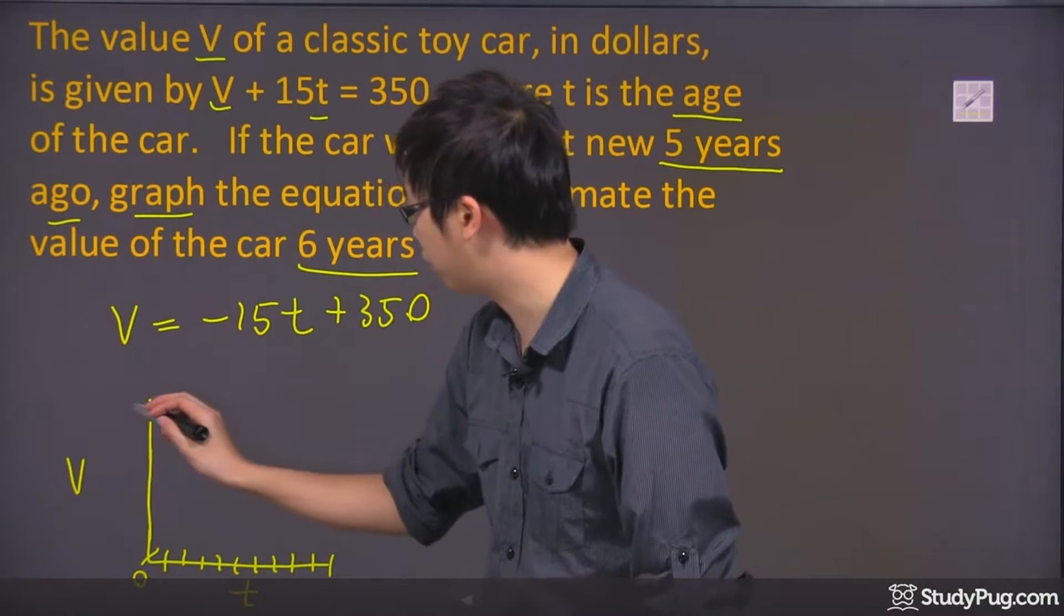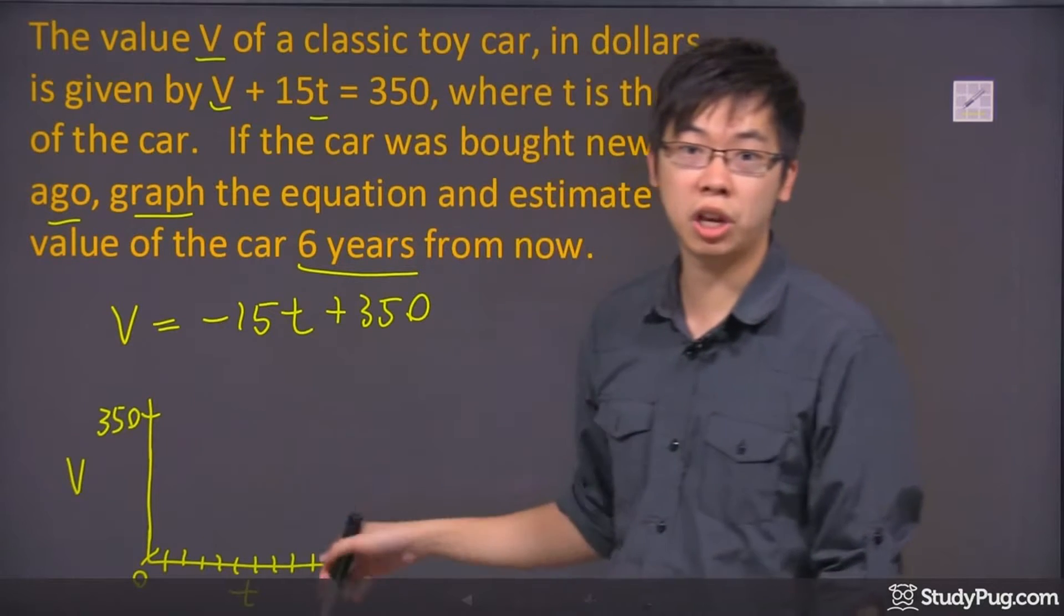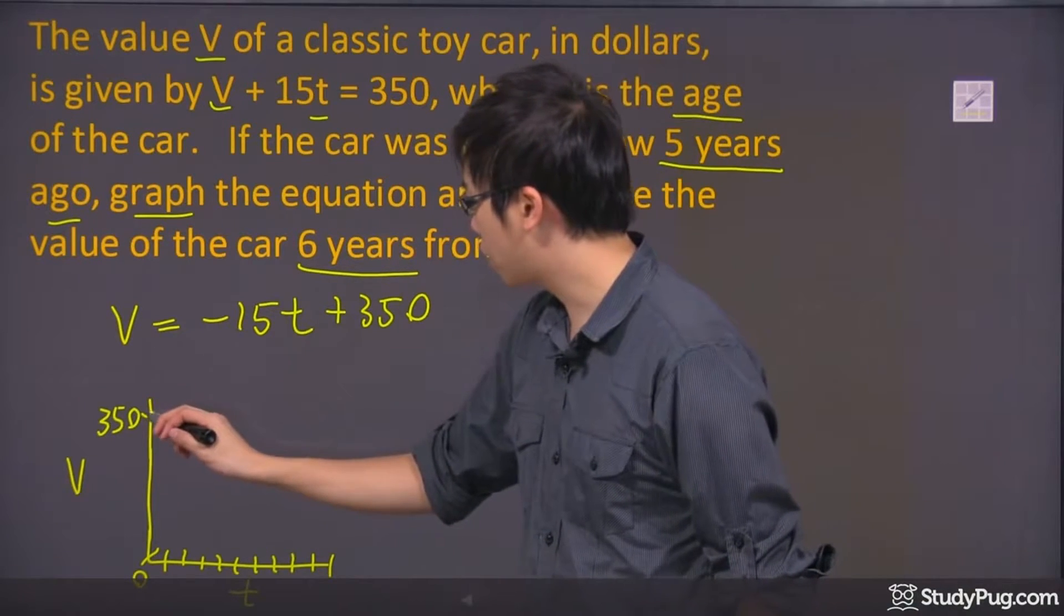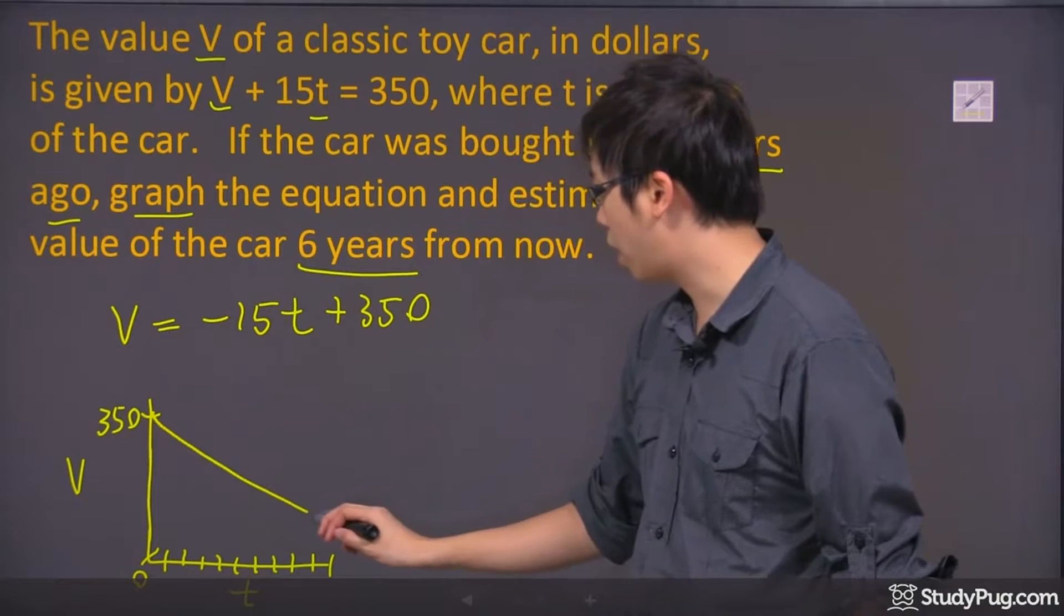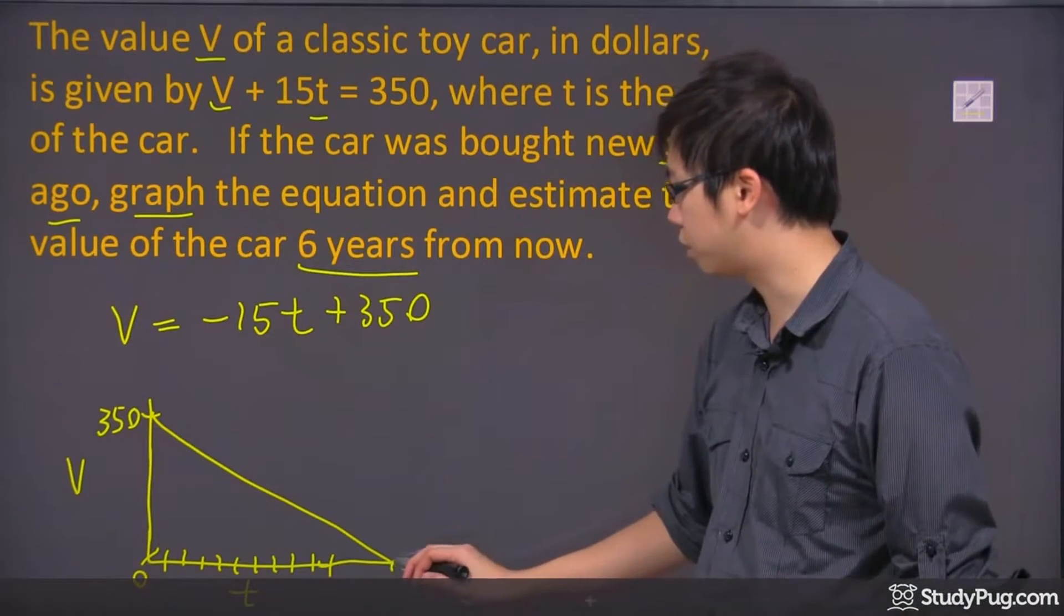Let's actually put the 350 all the way up here, because you can only go down, you can't go up. So somewhere along the time, you're going to depreciate all the way until you hit zero.